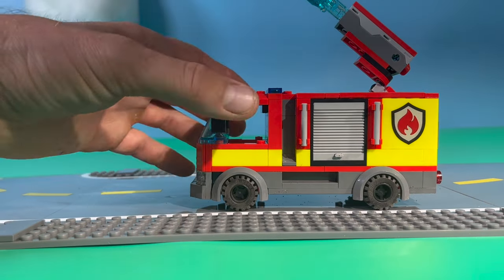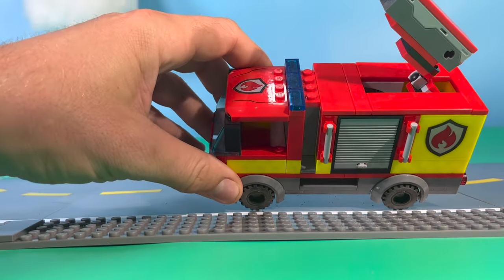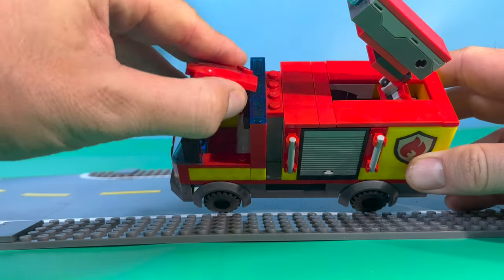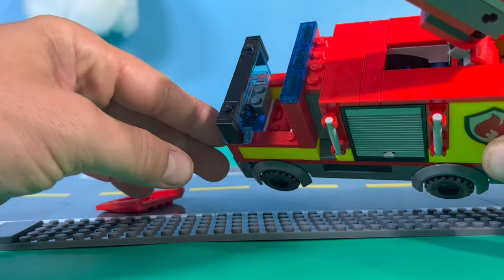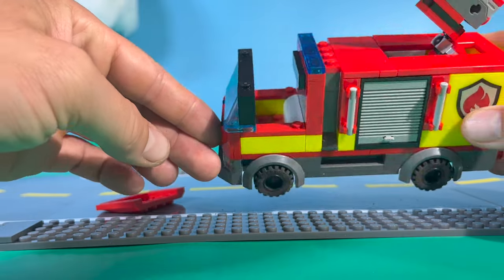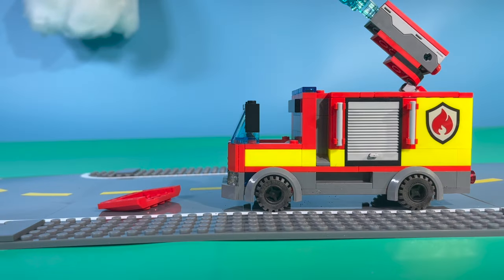One of the things I like most about this one is the access to put in the LEGO minifigure. Look, it just pops right off. Let's take a look inside the cab, complete with steering wheel and bench seat. Let's get our minifigure inside.